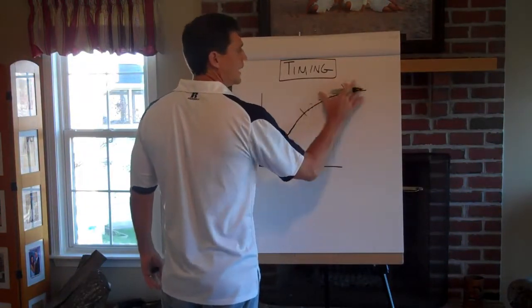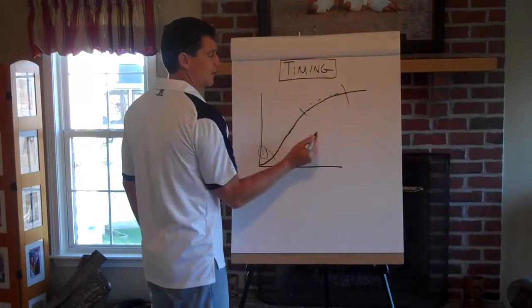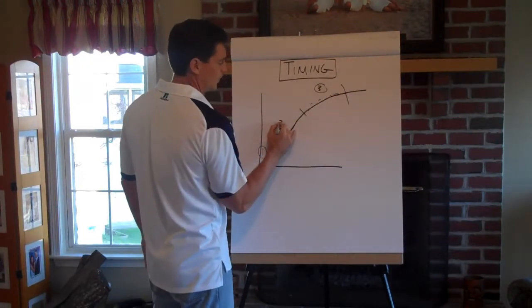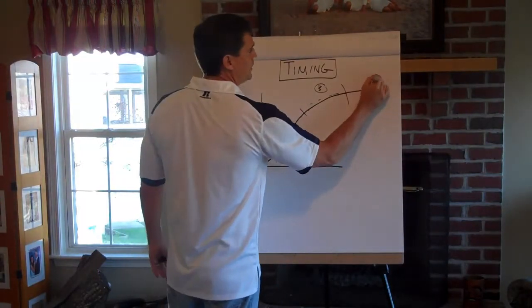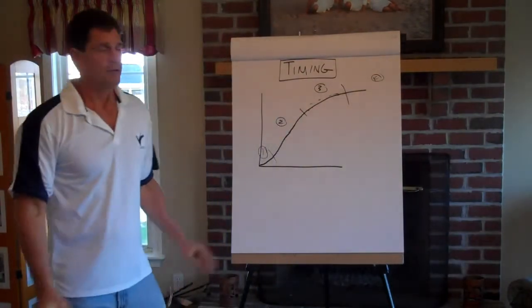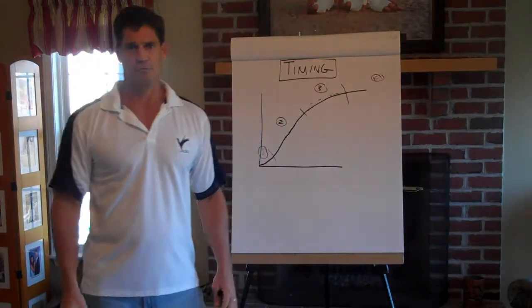Then as it continues on, you have what's called the later majority. That happens out here. That's kind of stage three. The early majority, early adapters, early majority, that's stage two. And then out here is maturity. That's what all industries go through.